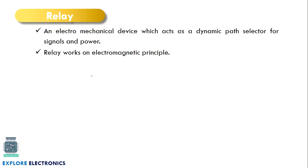What is a relay? Relay is an electromechanical device. It is called an electromechanical device because it takes an electrical input and performs some mechanical action, which acts as a dynamic path selector for signals and power. In a circuit, if we want to make the circuit open or close, we can use a relay.